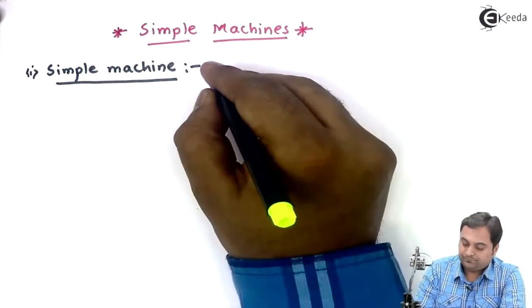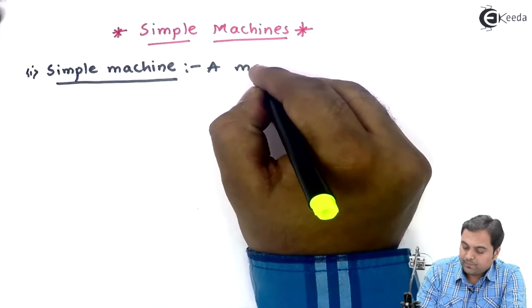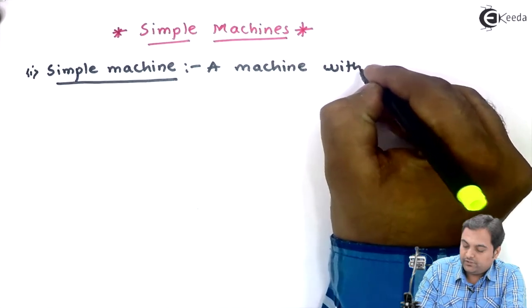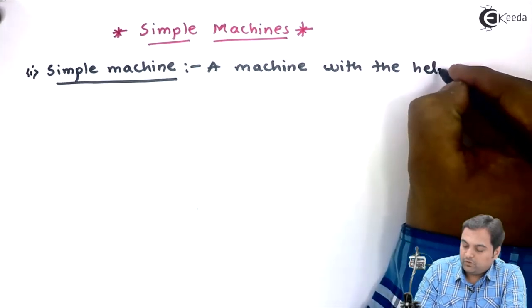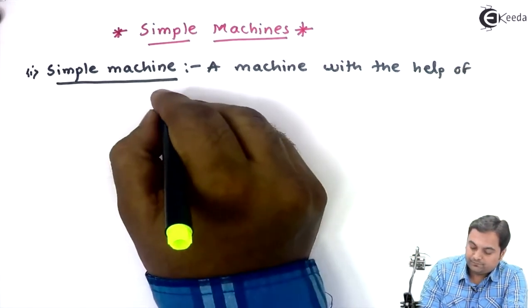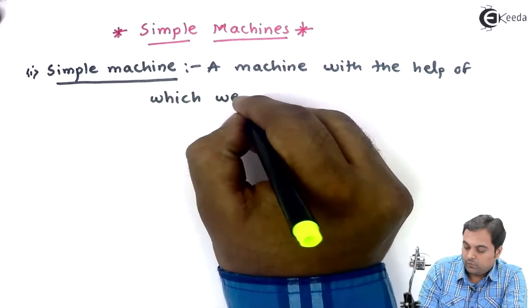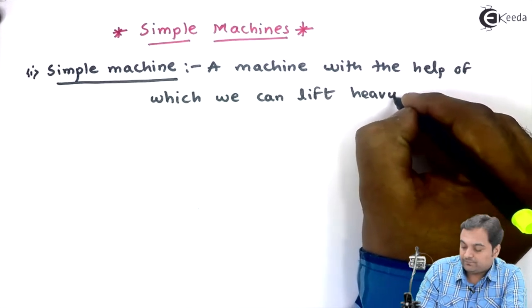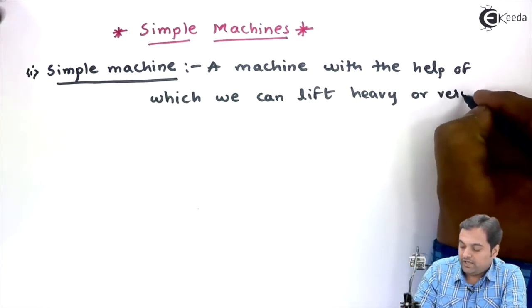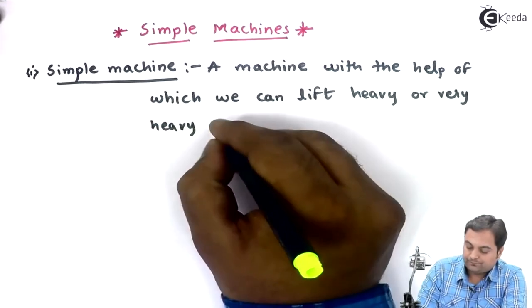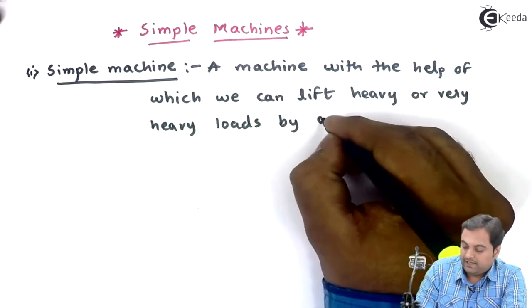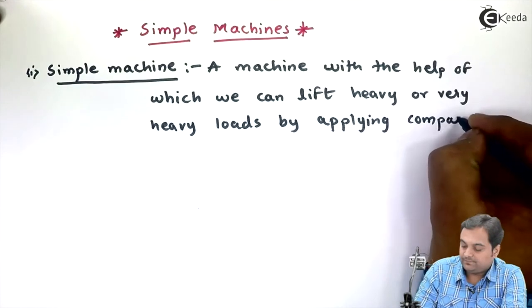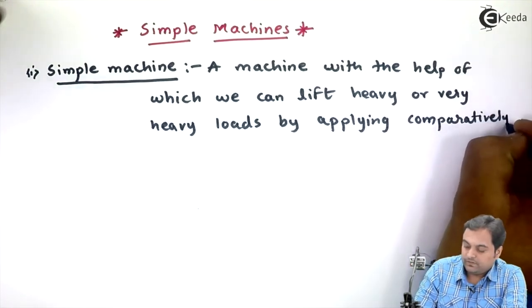A simple machine: a machine with the help of which we can lift heavy or very heavy loads by applying comparatively less effort.